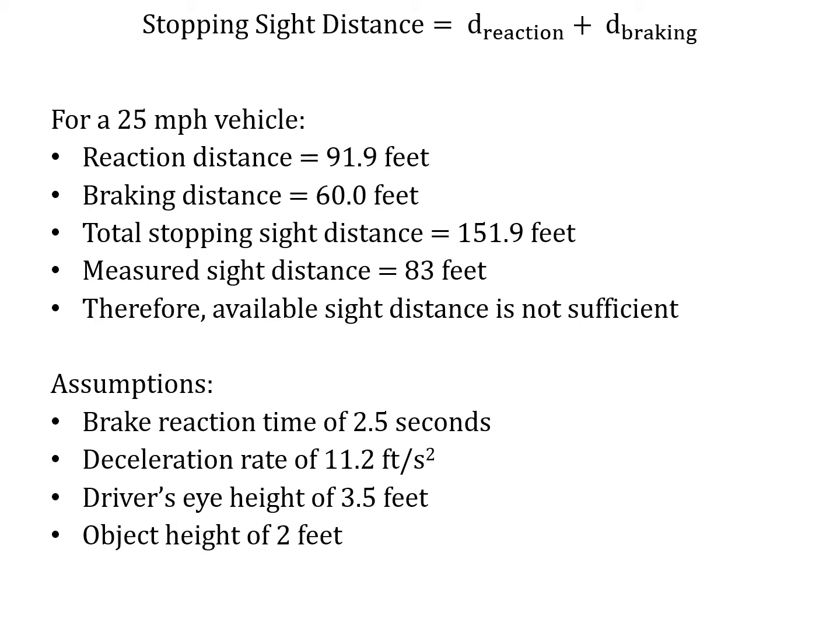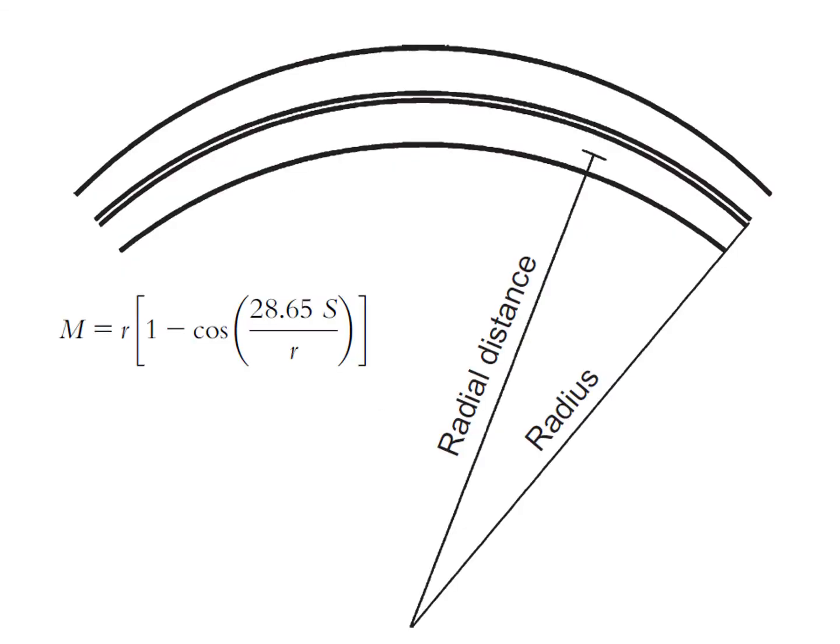It would be helpful to trim the vegetation back to increase available sight distance. Consistent with AASHTO assumptions, the driver's eye height was set at three and a half feet — the camera was mounted on a bicycle about three and a half feet above the road surface — and the stack of buckets represented an object height of two feet. We can also calculate how close vegetation can be to the roadway without restricting sight distance. The formula uses M (middle ordinate), R (radial distance), and S (stopping sight distance).